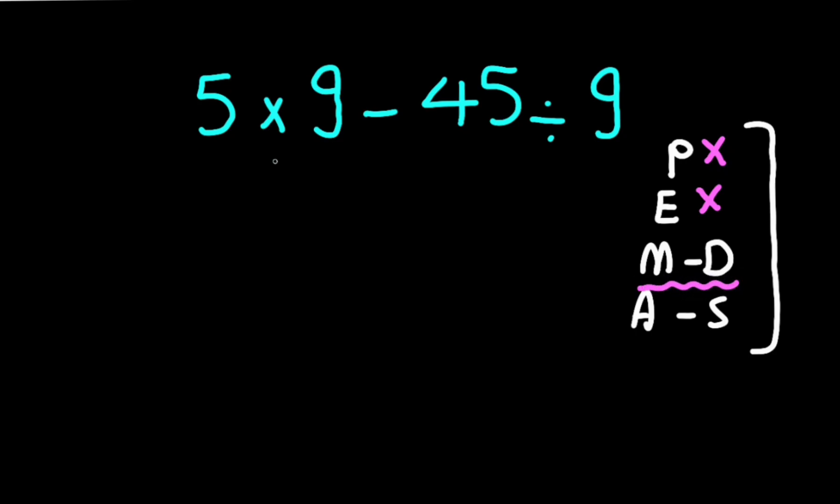As we know, multiplication and division have equal priority, so we have to solve from left to right. Now, 5 times 9 gives us 45, and 45 divided by 9 gives us 5.